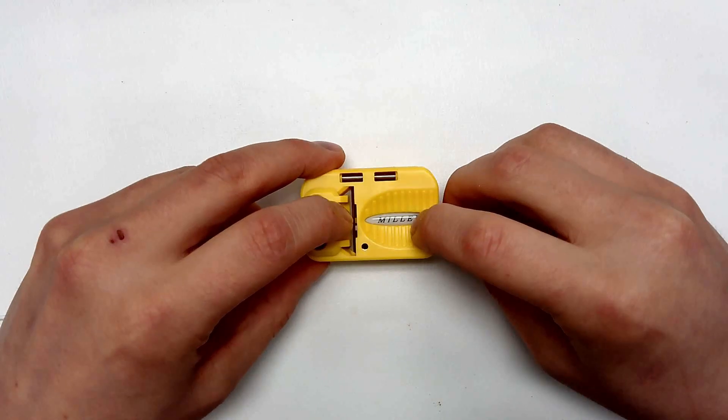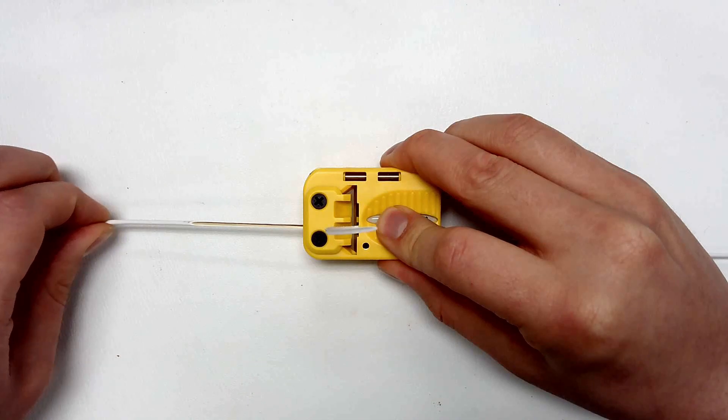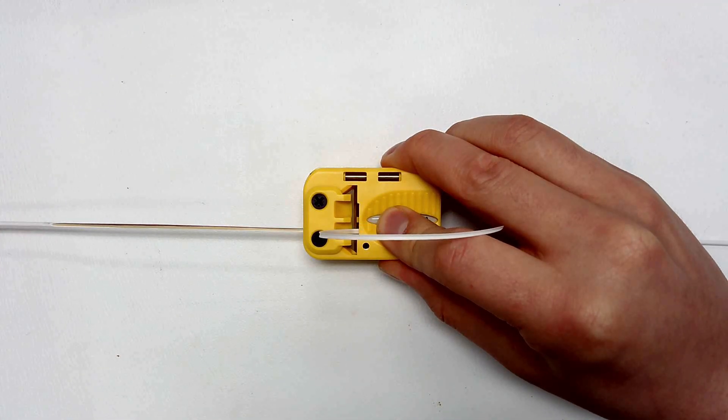Choose your application depth for a damage-free cut. Simply load the cable into the desired channel and pull to create an access window into the jacket with no harm to the fibers.